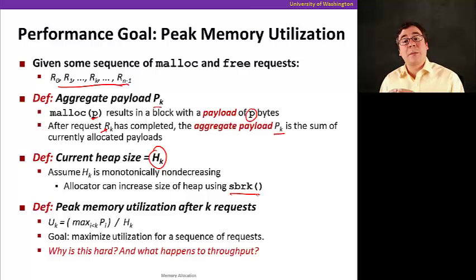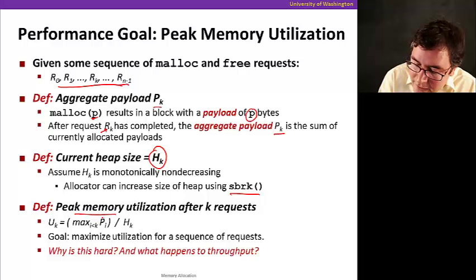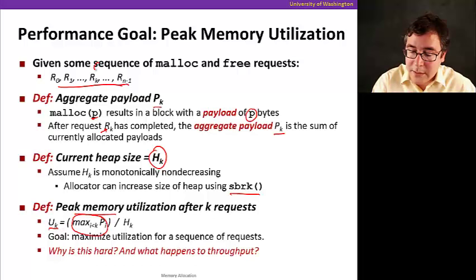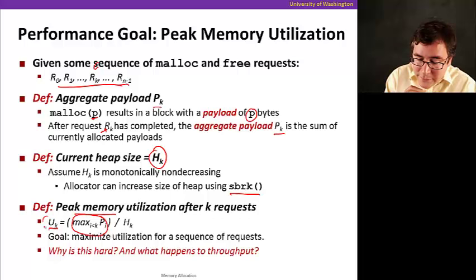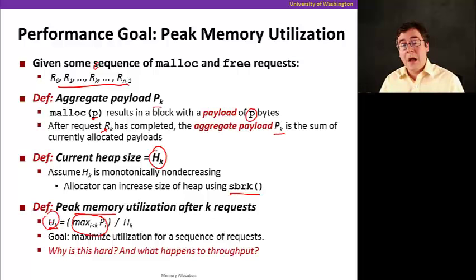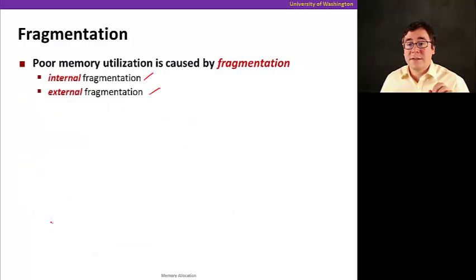And now, now that we know we define the current heap size and the aggregate payload, which is the aggregate number of useful bytes in a sequence of malloc and free requests, what we want to do is define peak memory utilization as the maximum of the payload up to request K. That's the peak memory utilization at the moment when you call a certain request here RK. And so the peak memory utilization is the fraction of the heap that was useful in the past. Remember that the heap never decreases, so that's why we're using max. So the peak memory utilization is the maximum aggregate payload divided by the size of the heap. And the goal is to actually maximize this number. We want to make the heap as useful as possible, whatever we're allocating the heap as useful as possible. Why this is hard? This is hard because of something called fragmentation. It's all the holes that appear in our heap. And by the way, managing that has an effect on throughput because it has overheads. It takes work by the memory allocator to provide that.